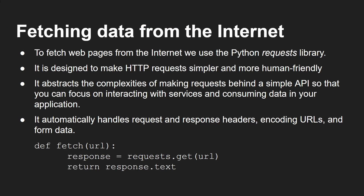Now, as I said, we're creating a search agent, so it's going to be important to also get things from the internet. To fetch a web page from the internet, we use the Python requests library. It's designed to make HTTP requests simpler and more human friendly — it abstracts the complexity of working with things like cookies, headers, URL encoding, and SSL for HTTPS. All you really need to do is say: response equals requests.get and then give it a URL. Then response.text gives you the text part of what comes back, not the headers. Really simple to get things off the internet.